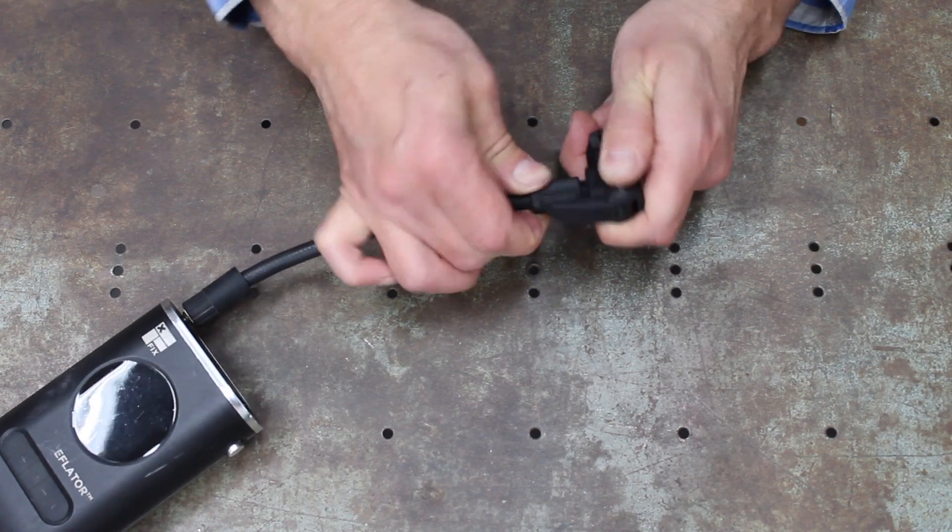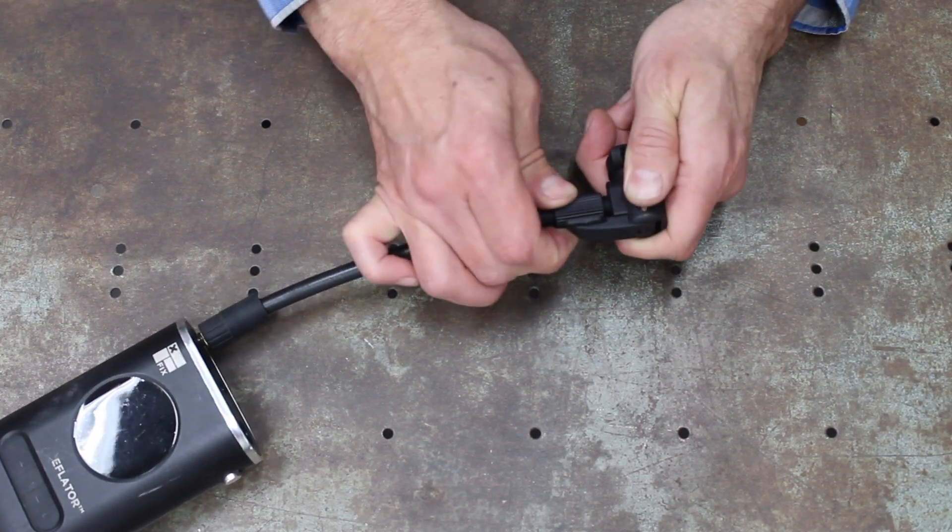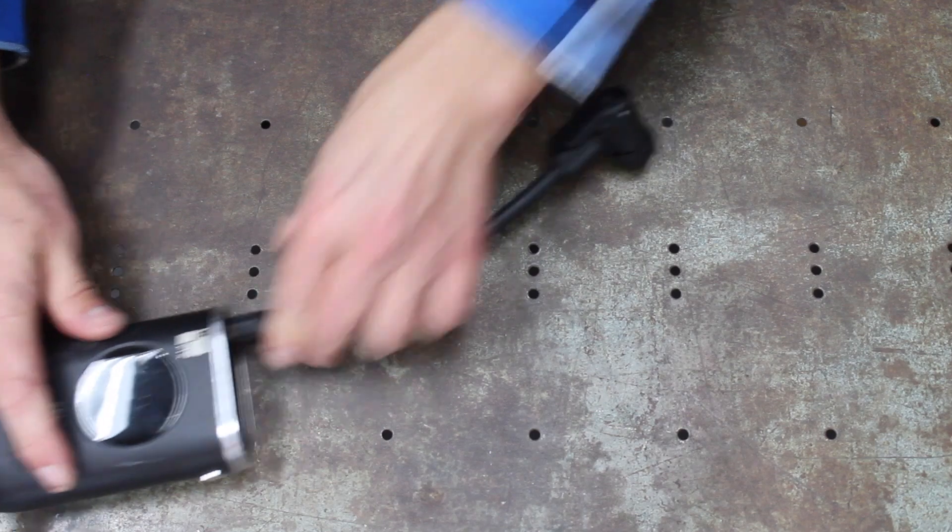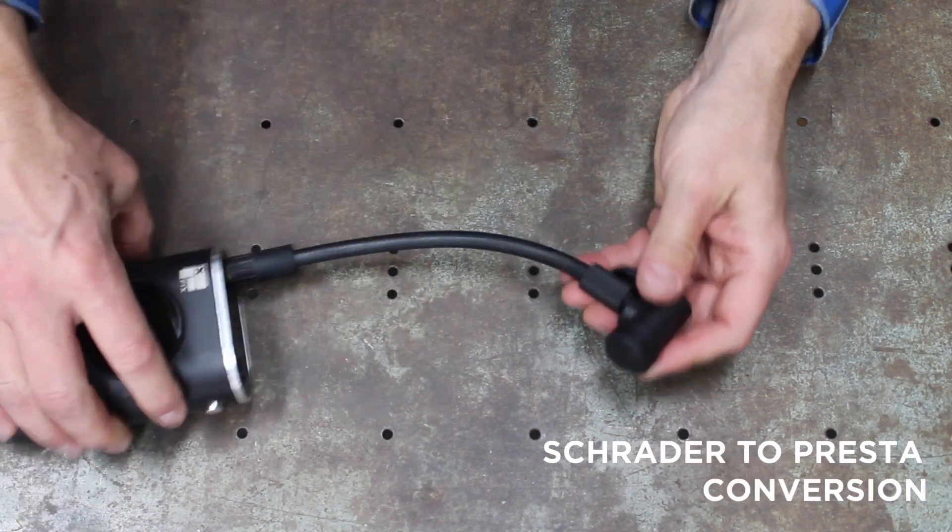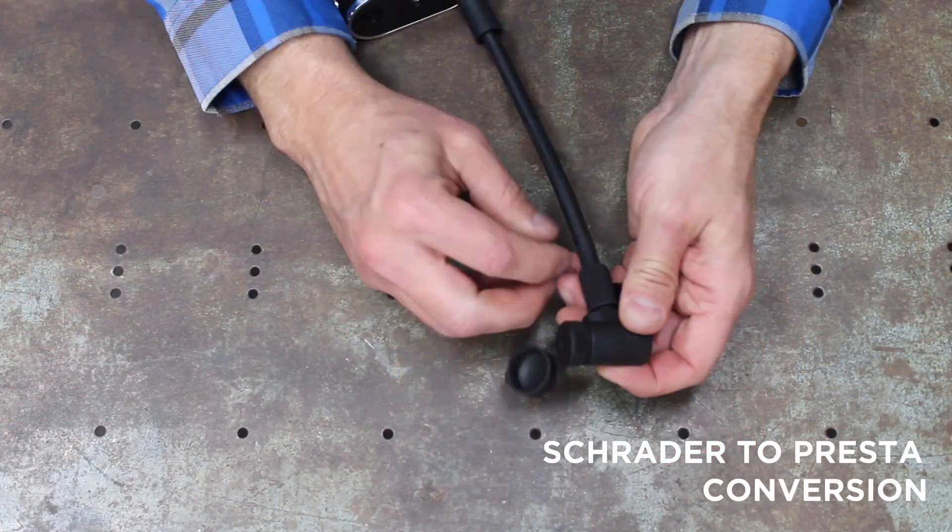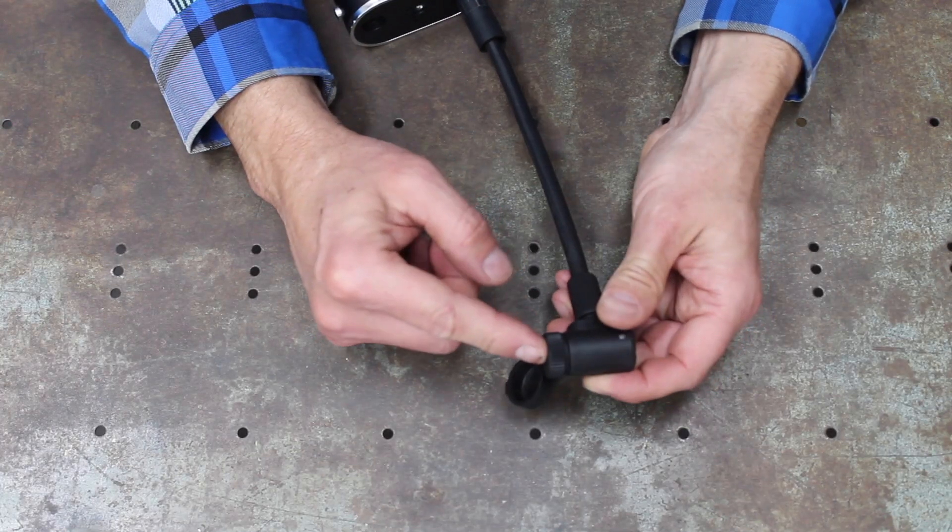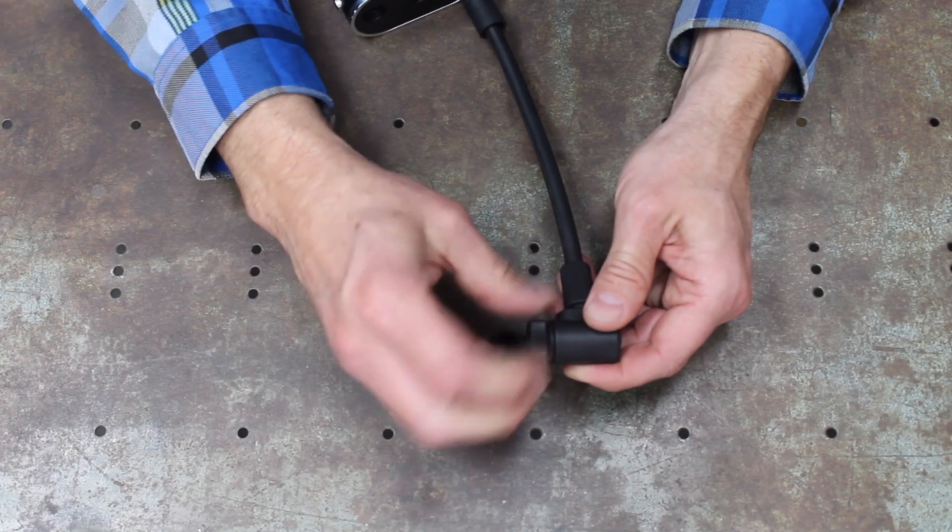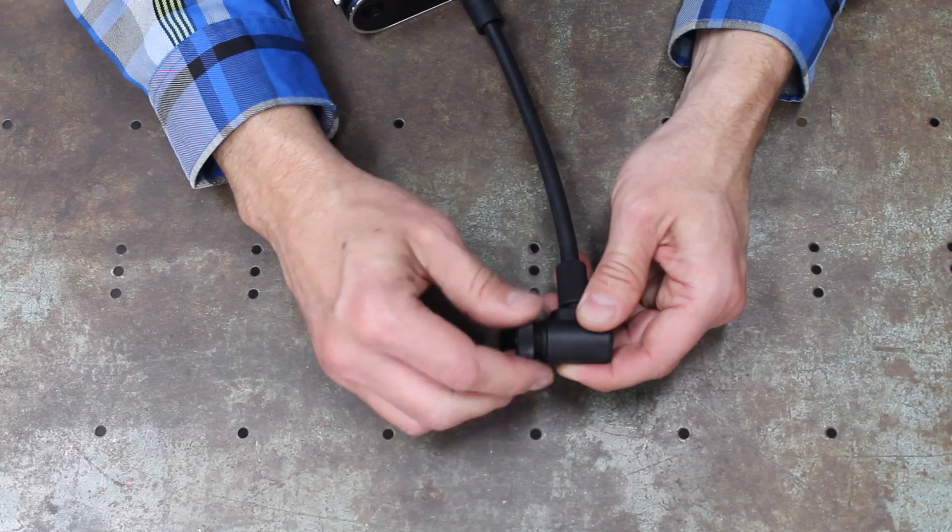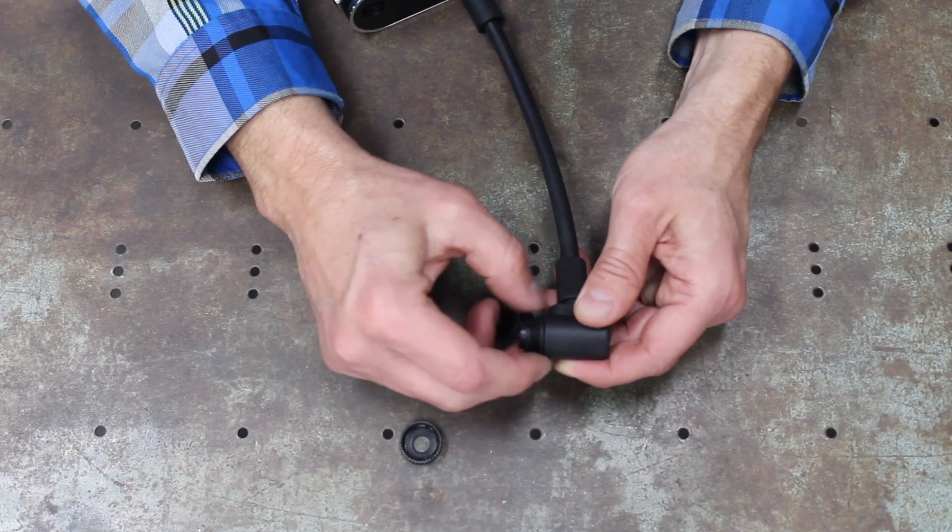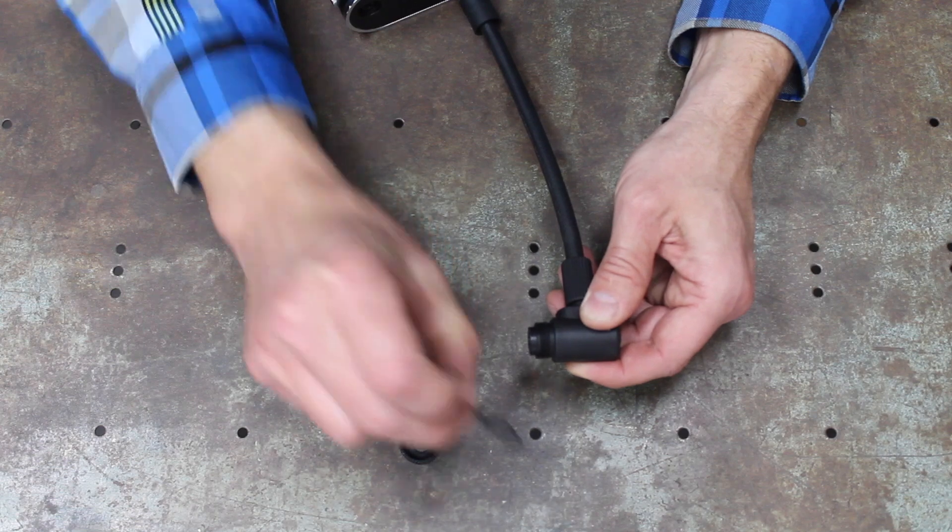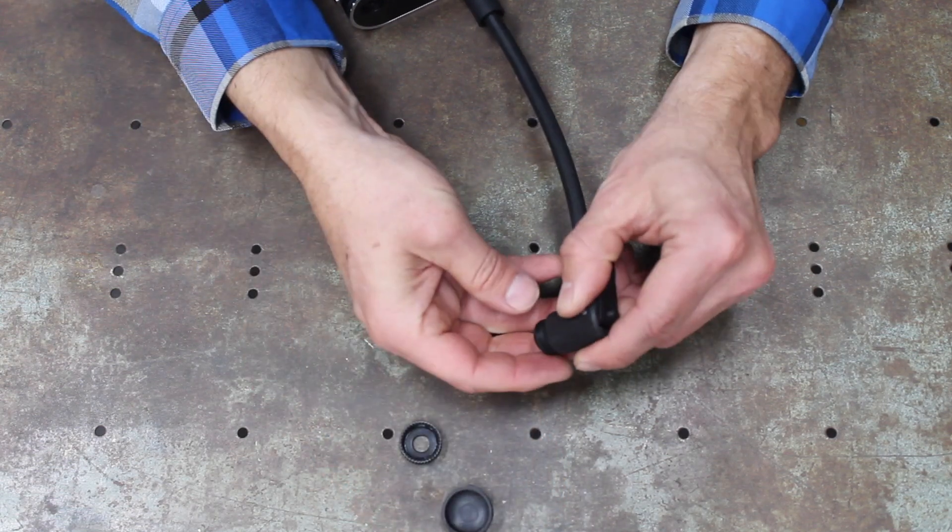The only last thing we need to do is set our valve here for Presta or Schrader. It should come stock Schrader, so what we're going to do is unscrew this, take off the little cover here, and then you can pull these guys out like that.